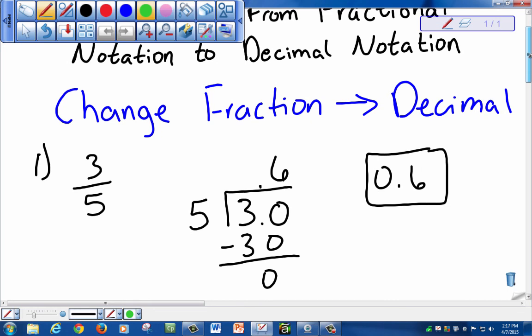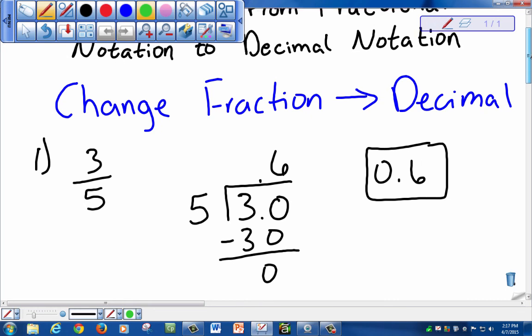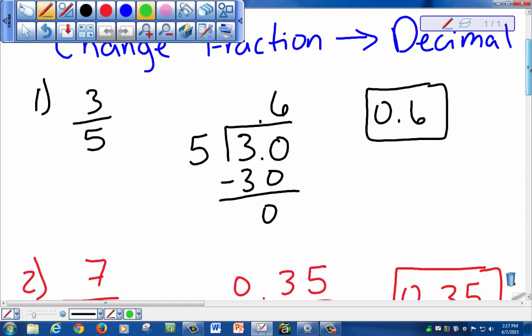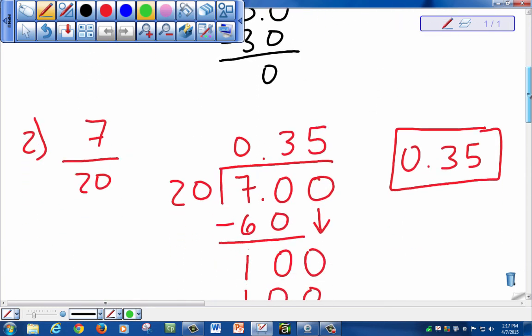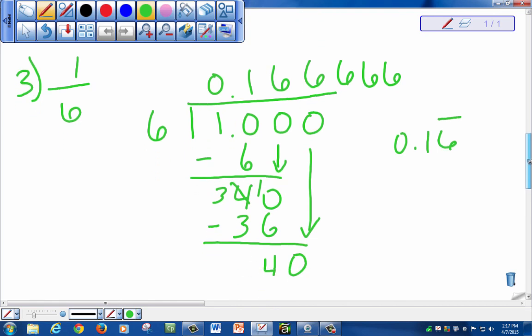We divide the numerator by the denominator until our remainder is 0 and that's where we'll stop. If your number repeats, we write that same number once and we add a bar letting the instructor know that that number repeats.